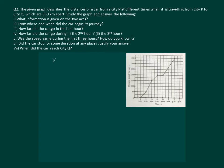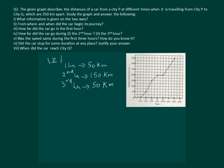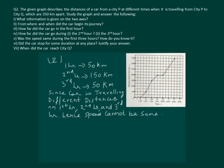Let us read the fifth part: was the speed the same during the first three hours? How do you know it? Since we already calculated that in the first hour the car traveled 50 kilometers, in the second hour it traveled 100 kilometers, and in the third hour it traveled 50 kilometers, the speed is changing every hour and hence it cannot be the same. Since the car is traveling different distances in the first, second, and third hours, the speed cannot be the same in the first three hours.